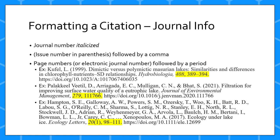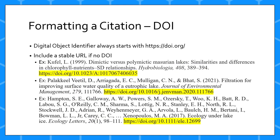Some electronic-only journals will have an article number rather than page numbers, which you should list here. The final element of the citation is the DOI, or digital object identifier. It will start with https://doi.org/, followed by the DOI assigned to your article.